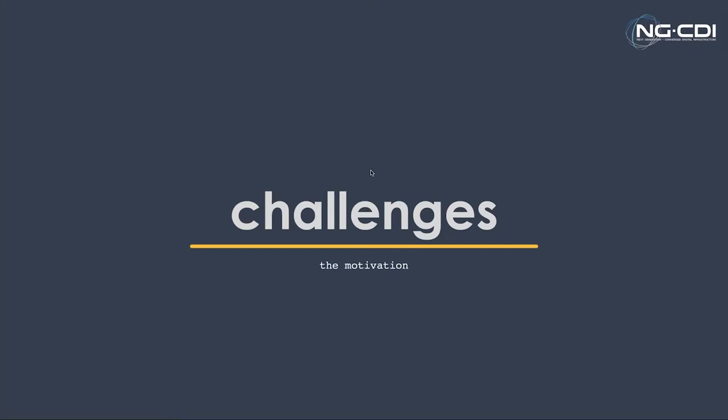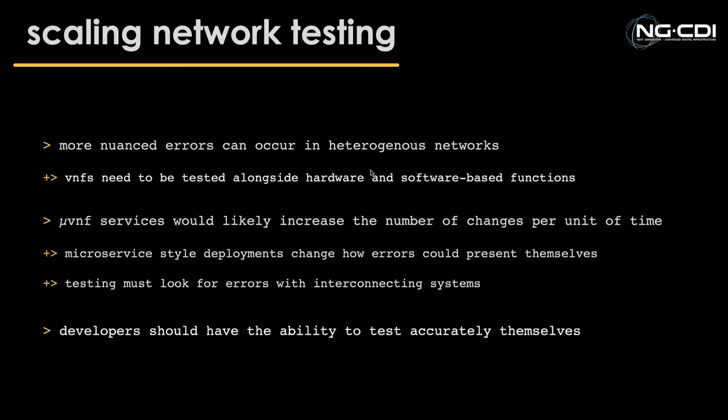So what actually motivates this work? If you're going to automate something, you want to be confident that the processing system will scrutinize input as much as you would before it completes the pipeline. In a network, that might mean catching errors in a switch configuration before it kills connectivity to a portion of the network. So in looking to automate, we naturally fall into network testing problems and how coming changes will further hinder the current approach.